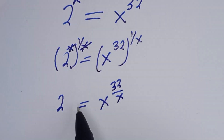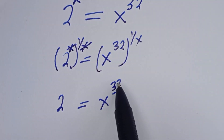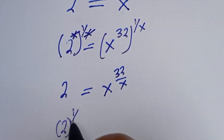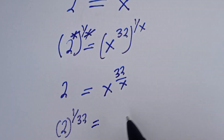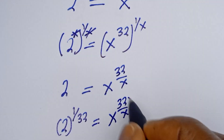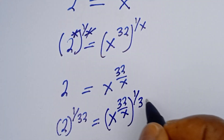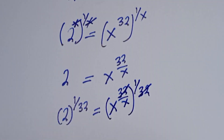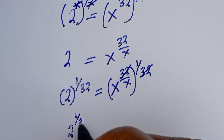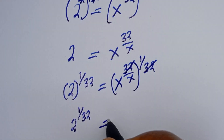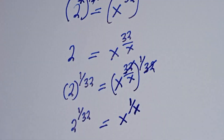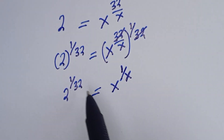Then let's multiply the exponent of both sides again by 1 over 32, in order to eliminate the 32. We get: 2 to the power of 1 over 32 is equal to s to the power of 32 over s times 1 over 32. This cancels, giving: 2 to the power of 1 over 32 is equal to s to the power of 1 over s.